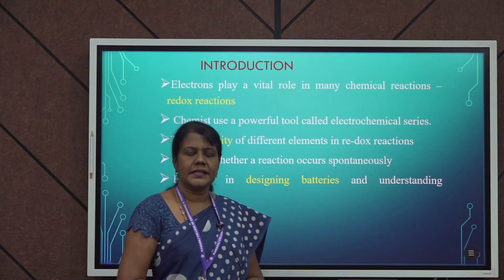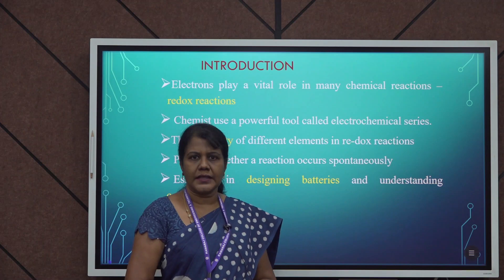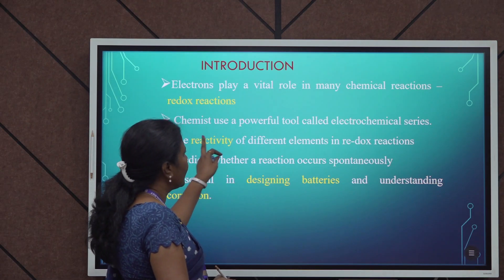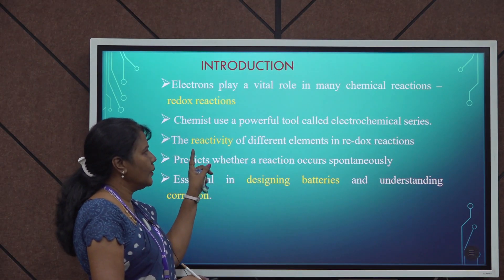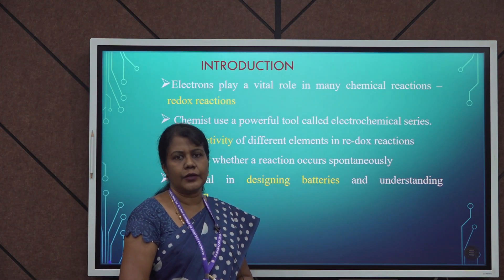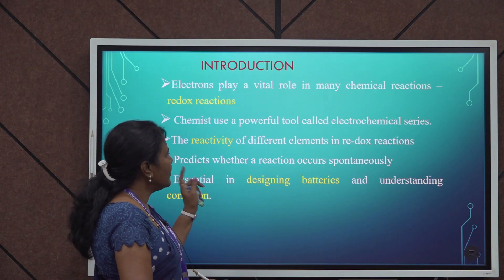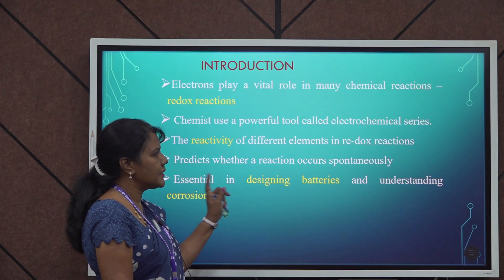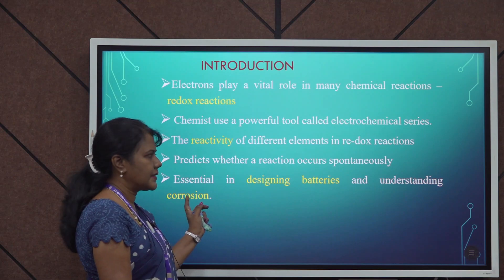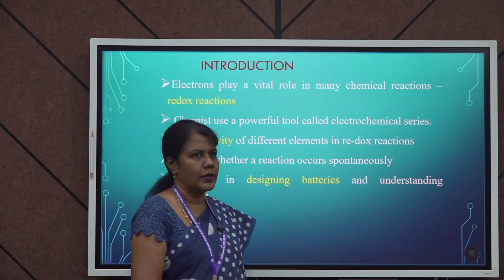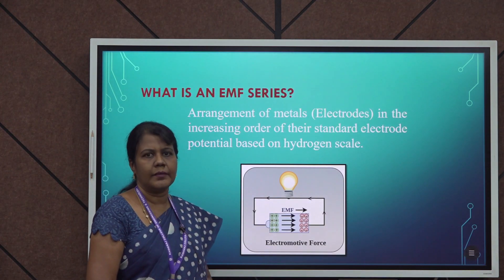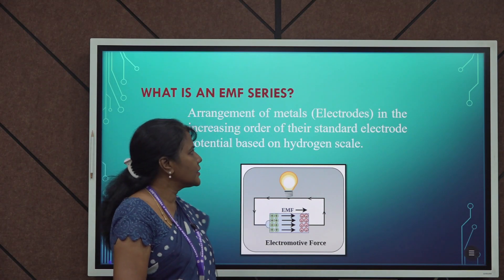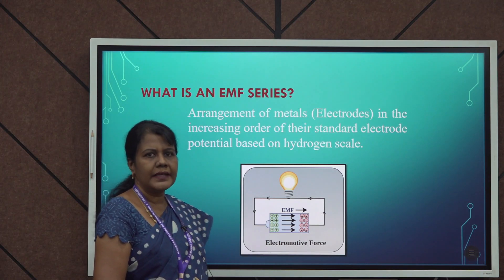In chemical reactions, electrons play an important role. Generally, in redox reactions either electrons will be lost or electrons will be gained. For chemists, this electrochemical series plays an important role. Moreover, from this series we can identify the reactivity of various metals, and also this EMF series predicts whether a reaction will occur spontaneously or not. It also has practical applications when designing batteries and to understand the concept of corrosion. EMF series is a collection or arrangement of metals based on their standard reduction potential value, based on the hydrogen scale, where hydrogen is selected as a standard.